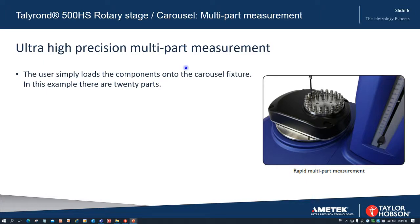The user simply loads these components onto the carousel fixture, and in this example here there are 20 parts fitted. What happens is the carousel rotates to bring the selected part over the instrument spindle axis, and if you look on the right you can see one of the parts is over the center of the spindle axis, and that's the one that's going to be measured.